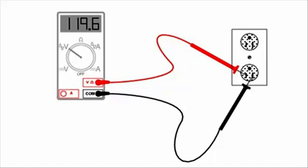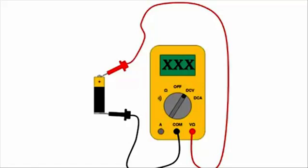Similarly, to measure the voltage in the battery, the red probe is connected to positive terminal and the black probe is connected to negative terminal. The multimeter then displays the battery voltage.